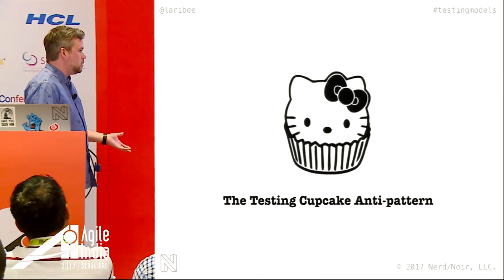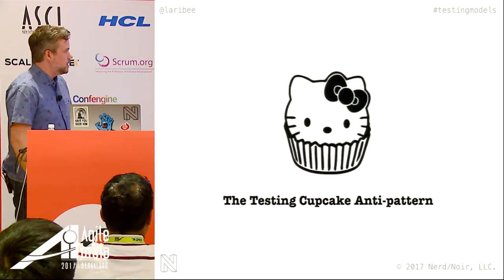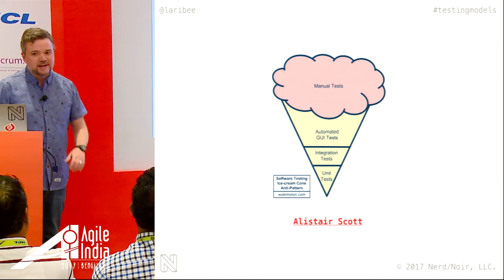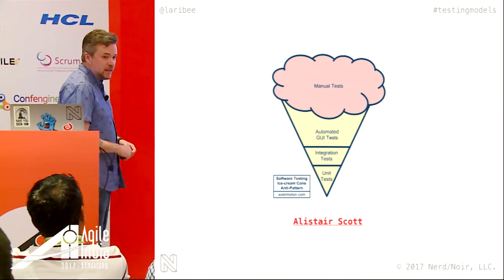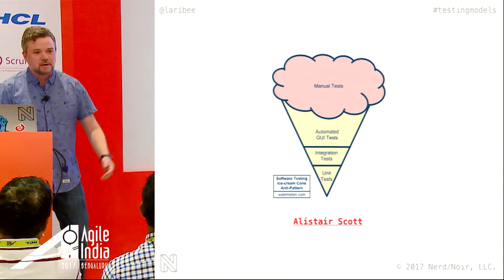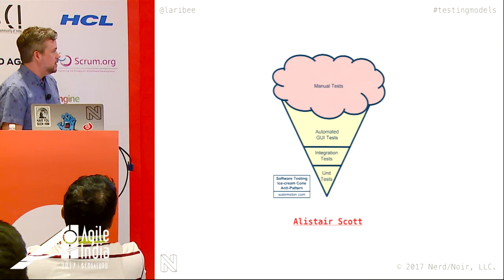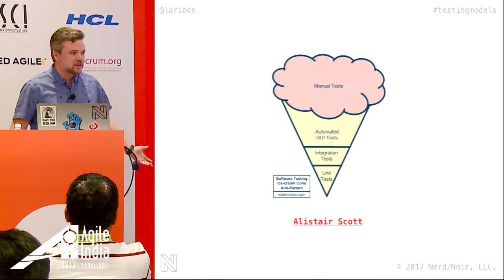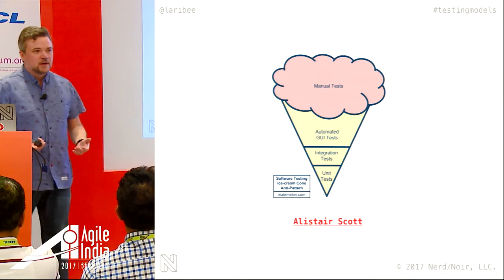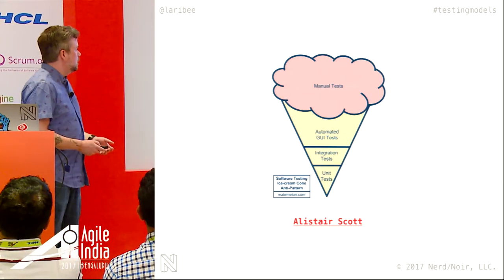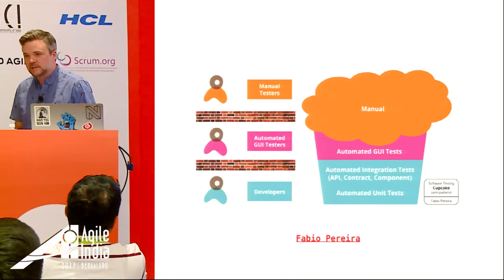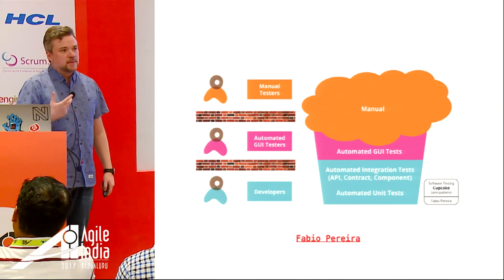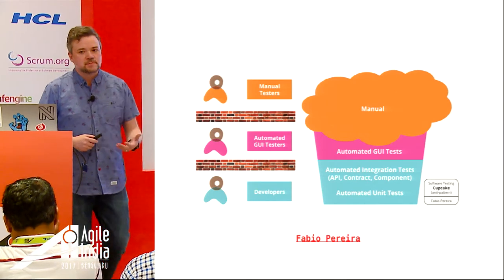The corollary is an anti-pattern — the testing cupcake anti-pattern. The ice cream cone anti-pattern has a bunch of manual tests at the top — ship it to the testing department, QA will fix it. Down at the bottom you have an inverted pyramid with maybe a couple unit tests from developers who went to a software craftsmanship conference, but it's certainly not a cultural thing. Then Conway's Law enters: the communication pattern of an organization will be reflected in the software systems it produces.